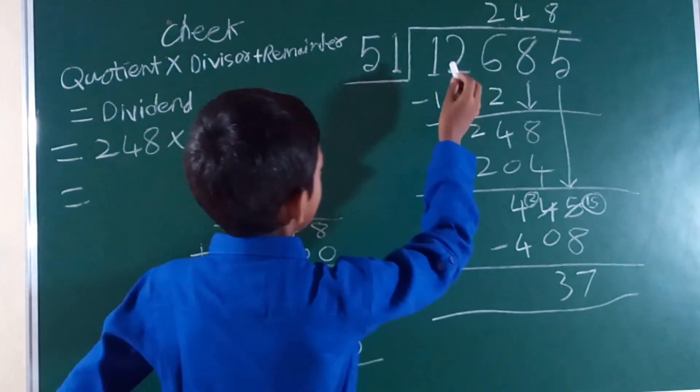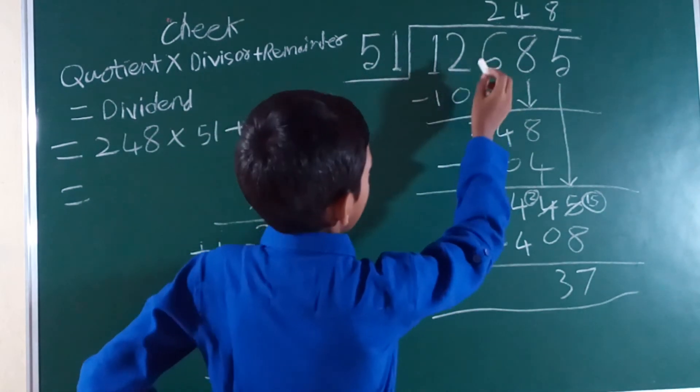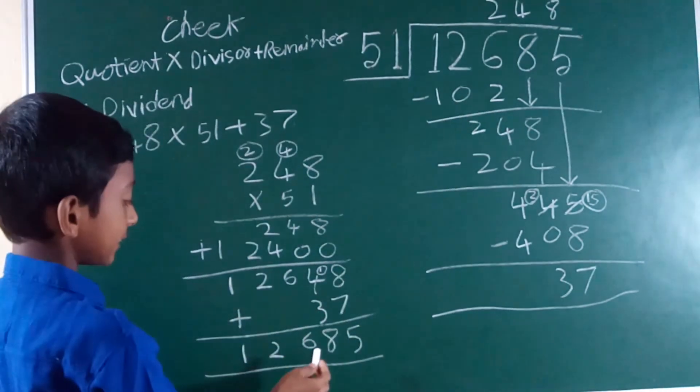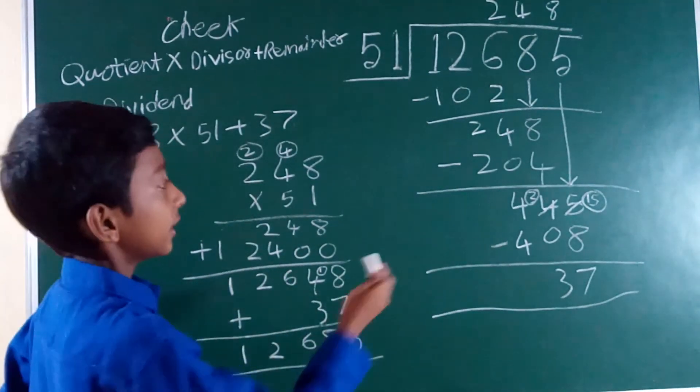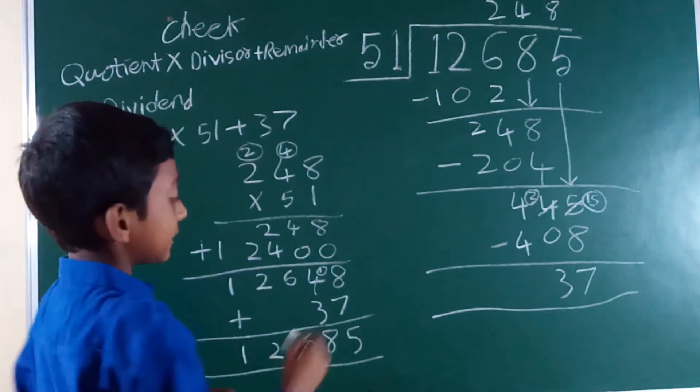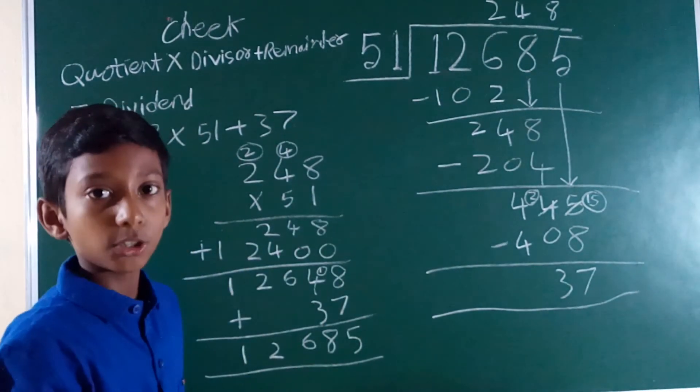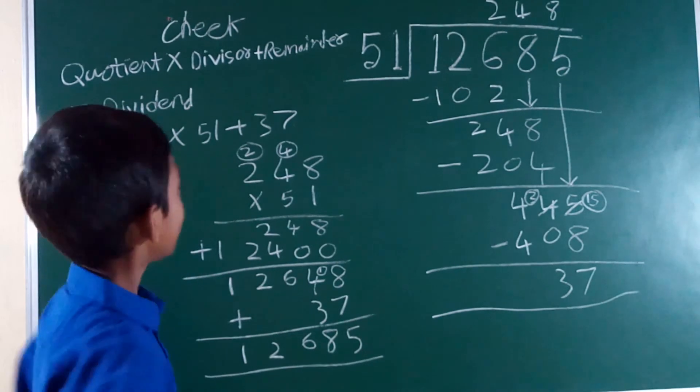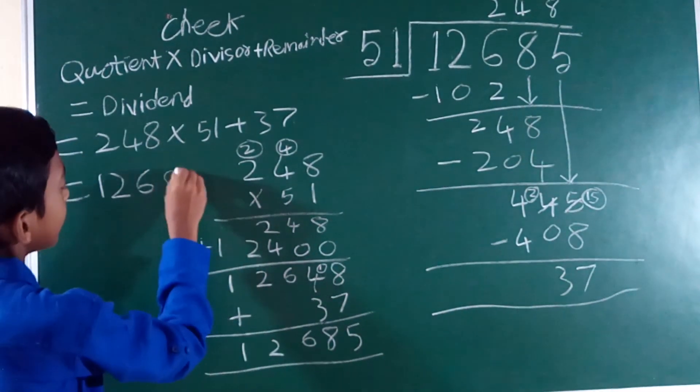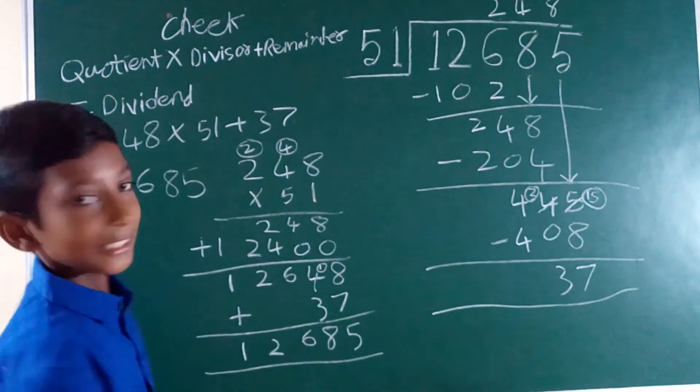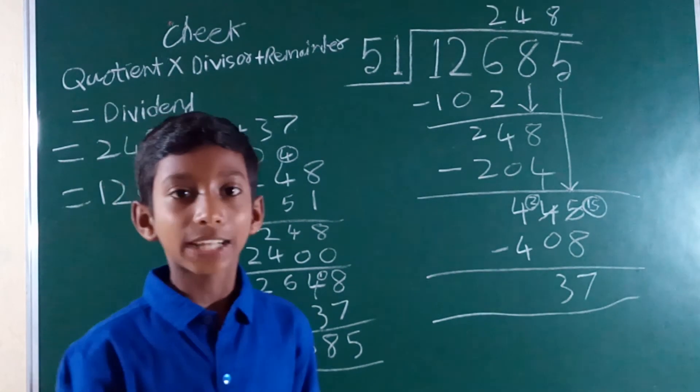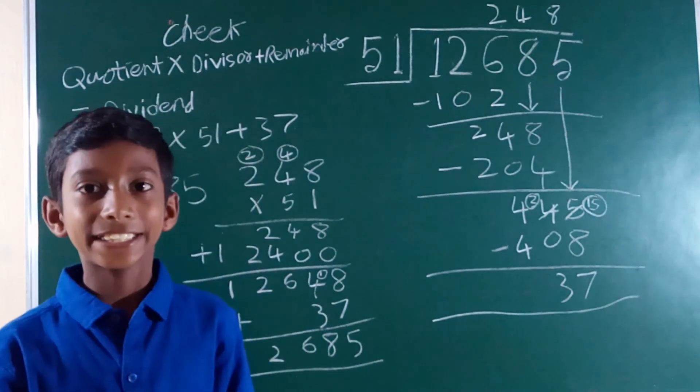And the quotient, that dividend also is 12,685. This number is matching with this number, so it is correct. Thank you for watching this video till the end. Do not forget to subscribe my channel CTND. Thank you.